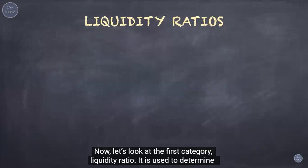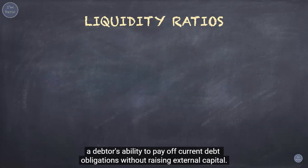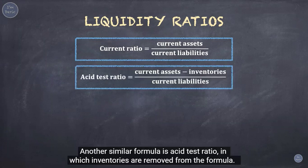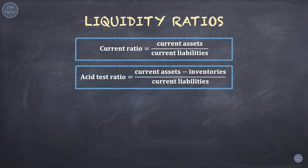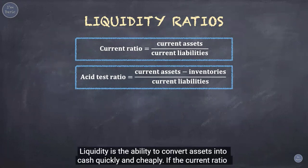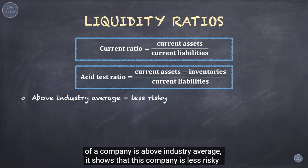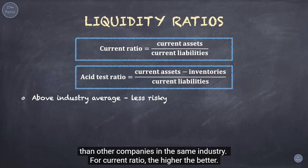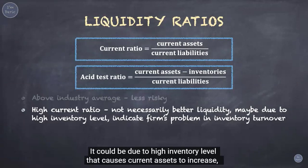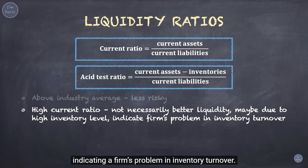Now let's look at the first category: liquidity ratios. They are used to determine the debtor's ability to pay off current debt obligations without raising external capital. To calculate the current ratio, we take current assets over current liabilities. Another similar formula is the acid test ratio, in which inventories are removed, so acid test ratio equals current assets minus inventories over current liabilities. Liquidity is the ability to convert assets into cash quickly and cheaply. If the current ratio is above the industry average, it shows the company is less risky. However, a high current ratio is not necessarily better — it could be due to a high inventory level, indicating a problem in inventory turnover.